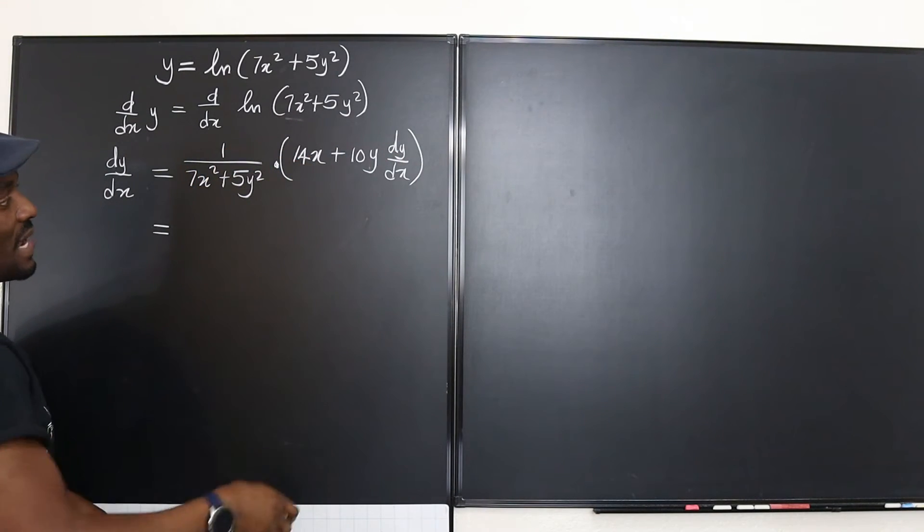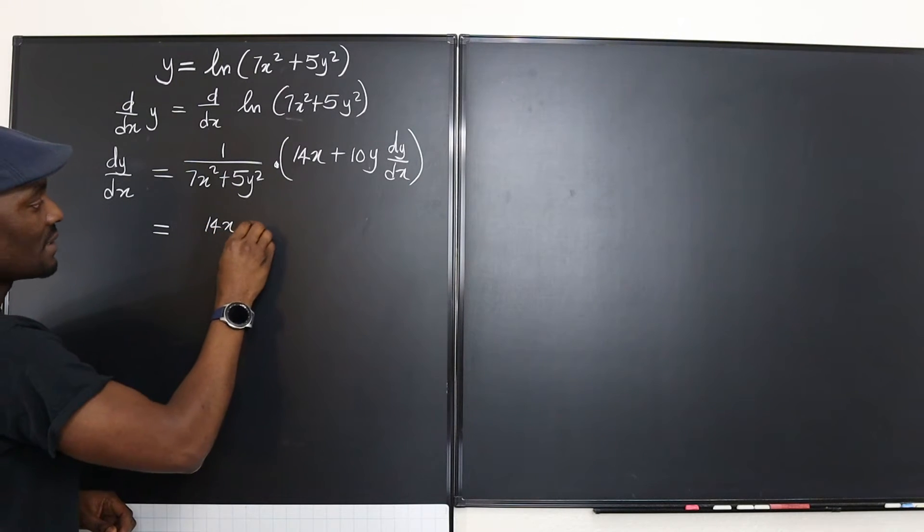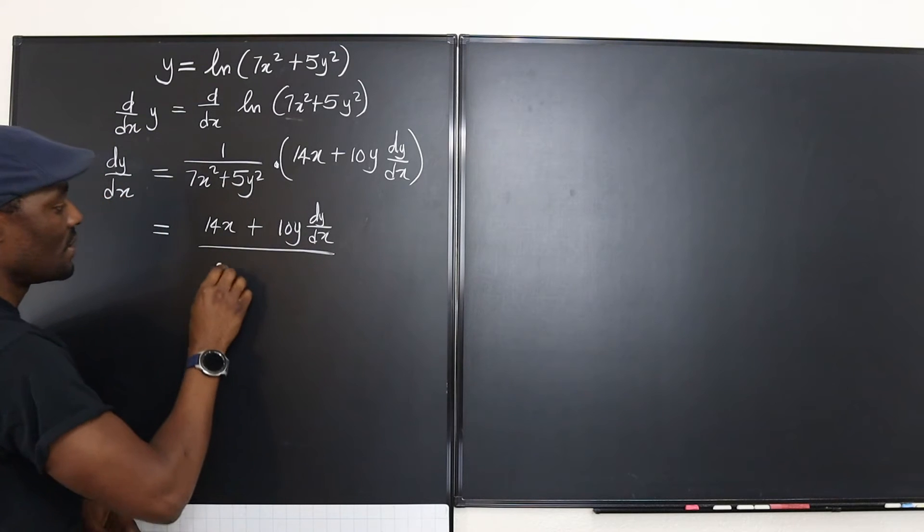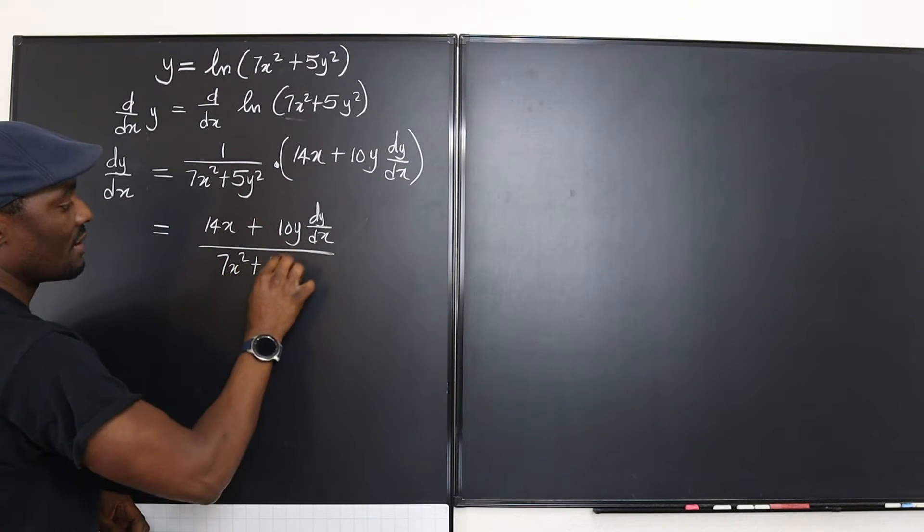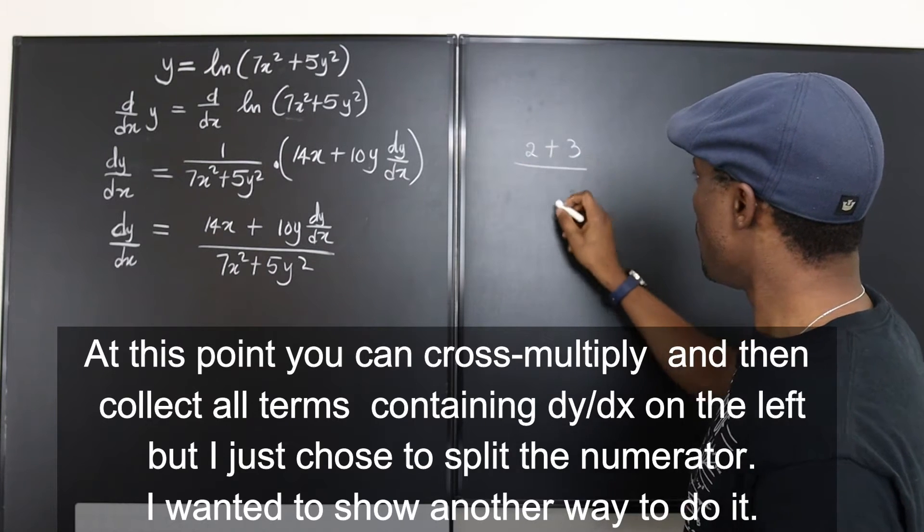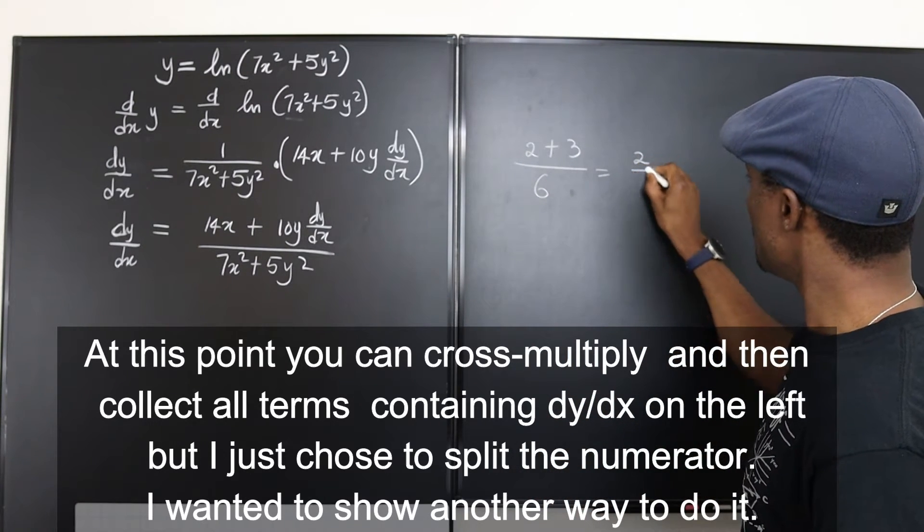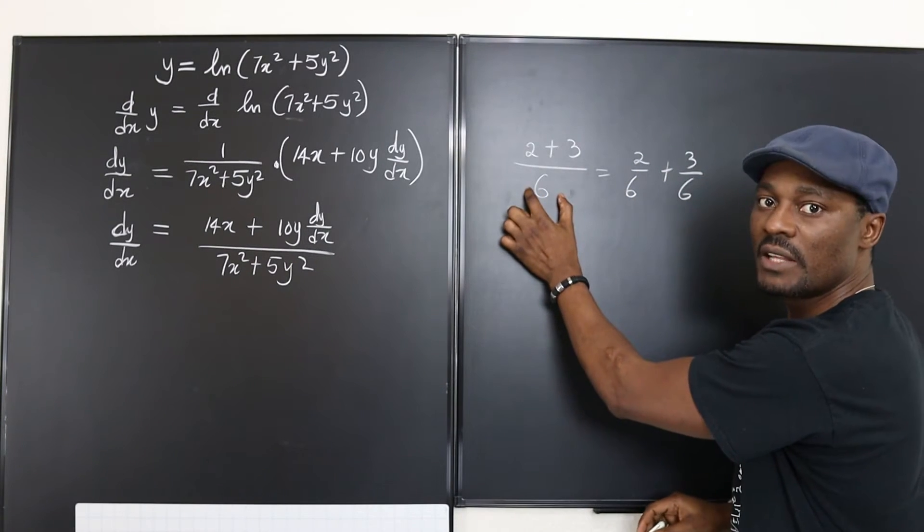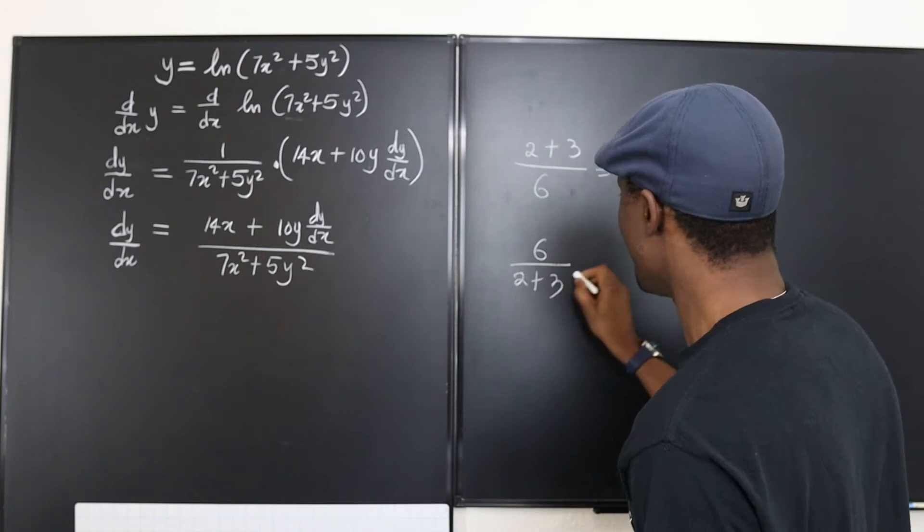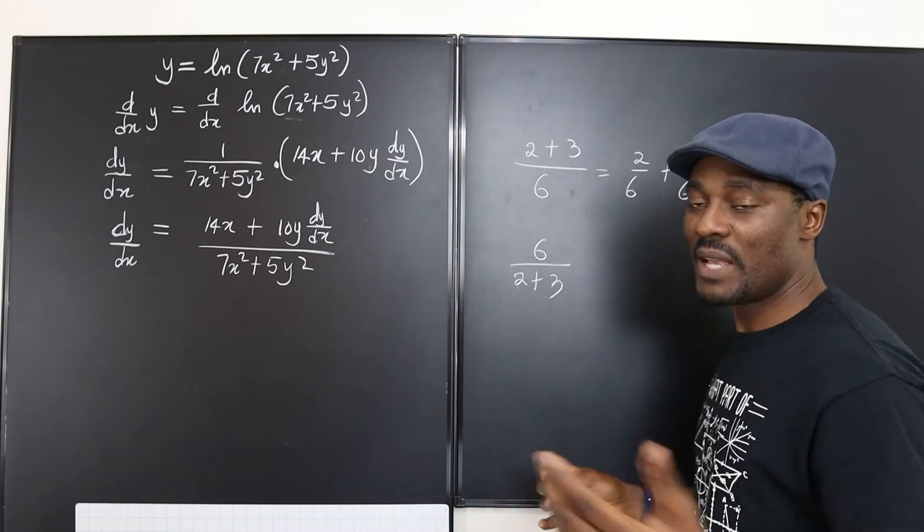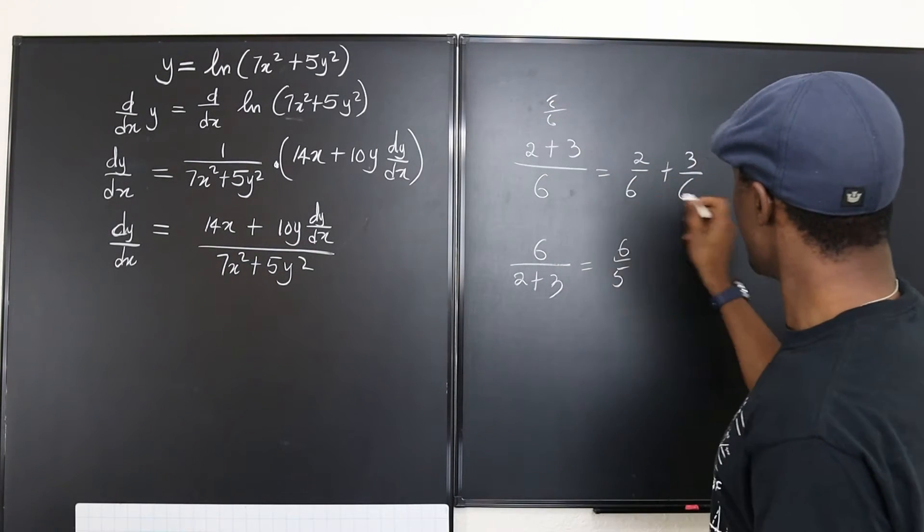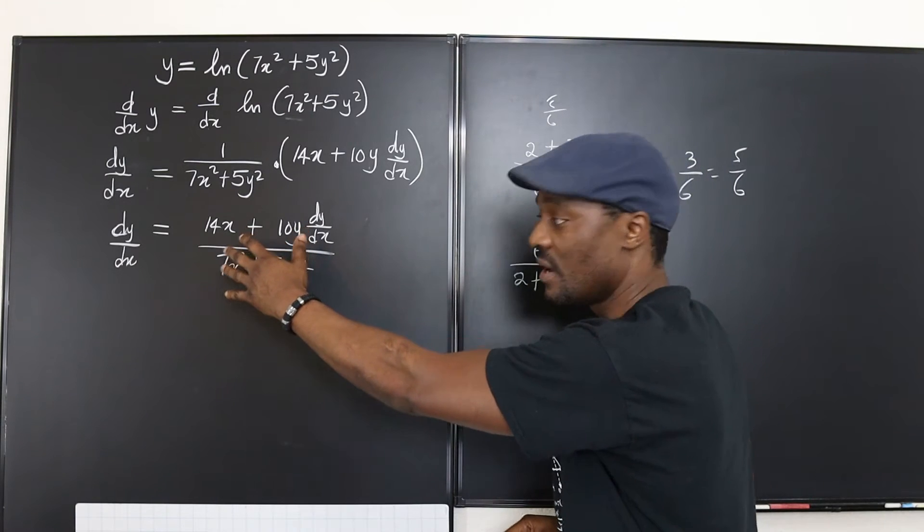Maybe we should rewrite this expression and see what this is going to look like. So I'm going to write it this way actually. I'm going to put this on top of this because this is multiplying this. So you're going to have (14x + 10y dy/dx) over (7x² + 5y²). That's our dy/dx. If you have 2 + 3 over 6, this is the same thing as 2 over 6 plus 3 over 6. You keep the same denominator, but you can split the numerator. Now you can't split the denominator. So remember, 6 over 2 + 3 cannot be split into two expressions based on what you know right now.